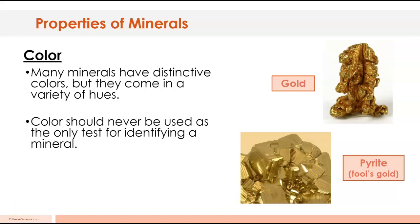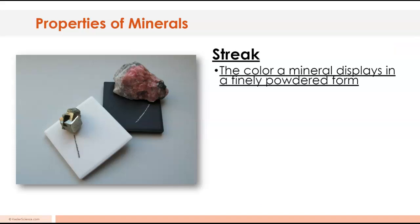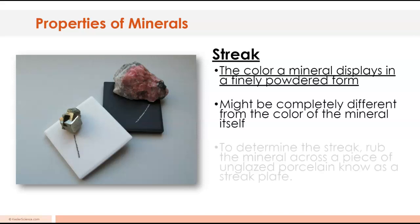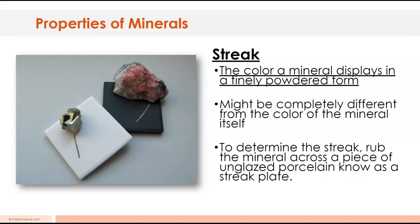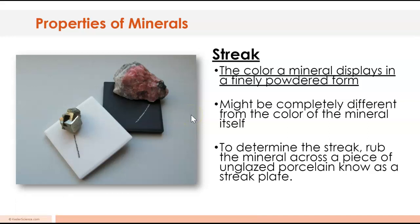Next up is streak. It's the color the mineral displays in a finely powdered form. The way we get that fine powder is by scratching it against a piece of unglazed porcelain known as a streak plate and then you see what's left behind. The weird thing about streak is sometimes you get a color that's totally different. We got this pink mineral over here and it leaves a white streak. This gold colored one leaves a black streak. Streaks can actually be better than just looking at the color itself. Go ahead and hit pause and write down streak and the definition of streak.